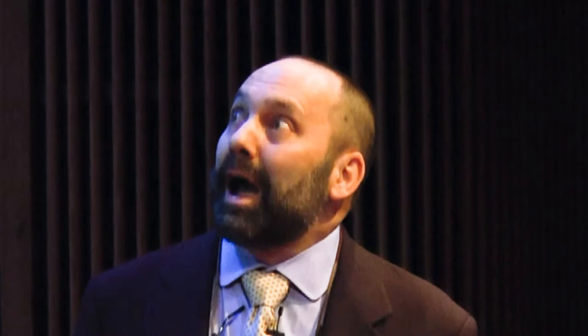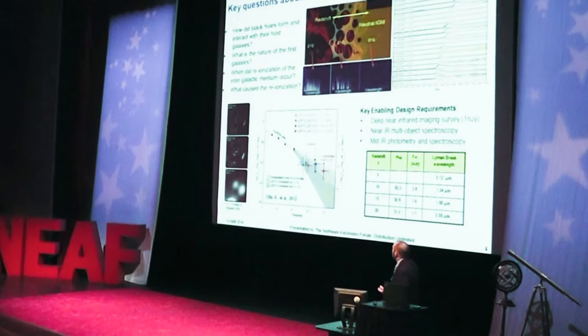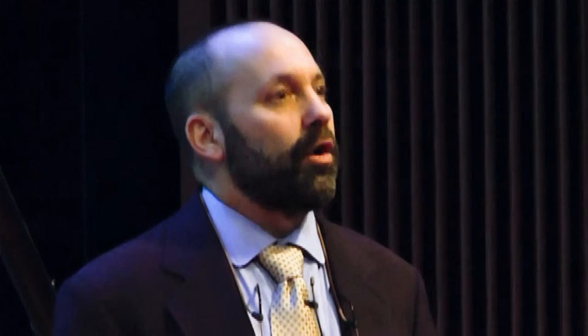The kinds of questions we want to answer about those first galaxies are: when did black holes form, and how did those black holes interact with the galaxies that surround them? What's the nature of the first galaxies? When did this reionization process occur, and exactly what caused it? So we had to design into the JWST an ability for very deep near-infrared imagery, and develop a technique for near-infrared multi-object spectroscopy — observing more than one object at once. These galaxies are very faint, taking weeks of observing to get a spectrum, so we've had to design instrumentation that allows us to take spectra of a hundred galaxies at once.